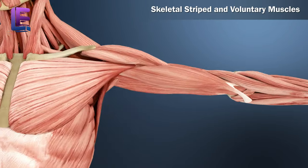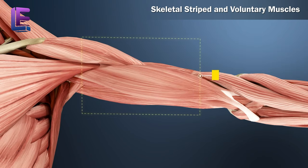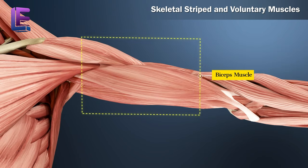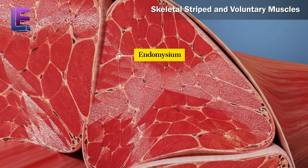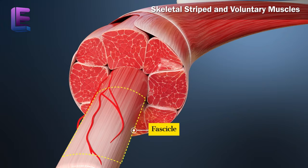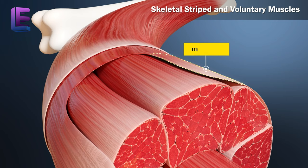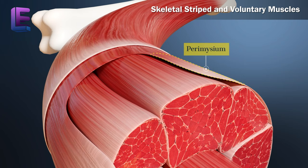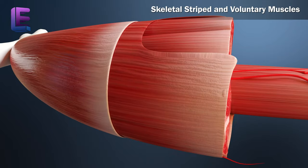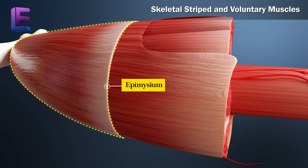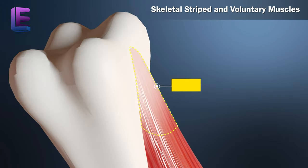Skeletal muscles are usually attached to bones via tendons. In a typical muscle such as the biceps, skeletal muscle fibers are bundled together in a connective tissue sheath called endomysium. A bundle of muscle fibers is called a fascicle, and the connective tissue sheath connecting it is called perimysium. A group of fascicles forms a muscle, and the connective tissue sheath covering such a muscle is called epimysium. The connective tissue layers that cover the muscle end together forming a tendon.